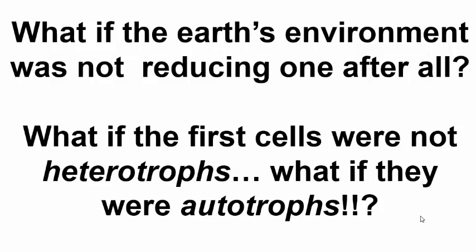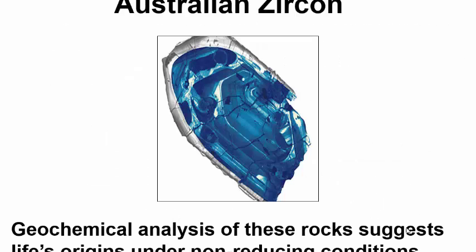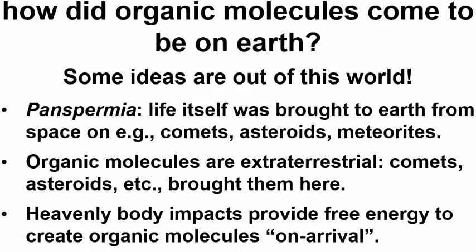Evidence that the prebiotic Earth might not have been a reducing Earth comes from rocks like this piece of zircon dated to 4.4 billion years ago, during the Hadean Eon beginning at the Earth's formation about 4.8 billion years ago. Definitive evidence of life goes back to 3.8 or maybe as far as 4.1 billion years ago, but geochemical analysis of these Australian zircon rocks suggests that their oxidation state is the same as that of rocks dating to much more recent times — well after life existed on Earth. This is the evidence that the early prebiotic Earth environment might have been non-reducing. Could organic molecules — or even complete living organisms — have come from outer space? The ideas may not be as crazy as they sound.